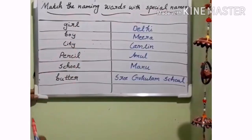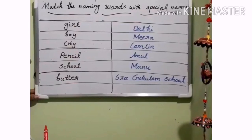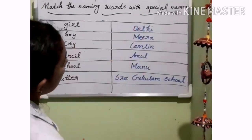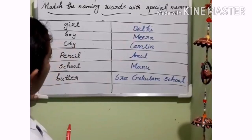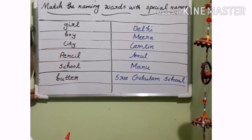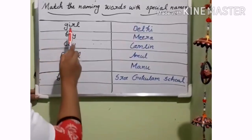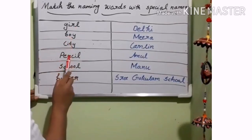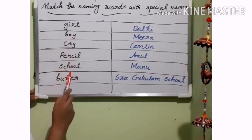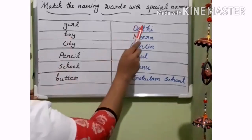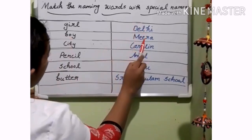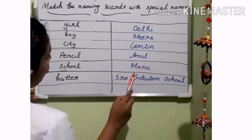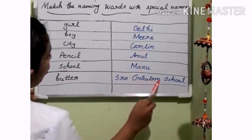Look at the board, children. Match the naming words with the special names. In the first column, I have written the nouns, and in the second column, I have written the proper nouns. Here in column one: girl, boy, city, pencil, school, butter. And here in column two: Jalhi, Meera, Camlin, Amul, Manu, Sri Gokulam School.